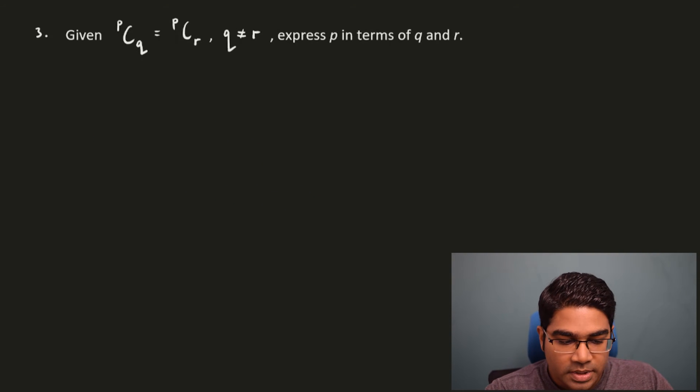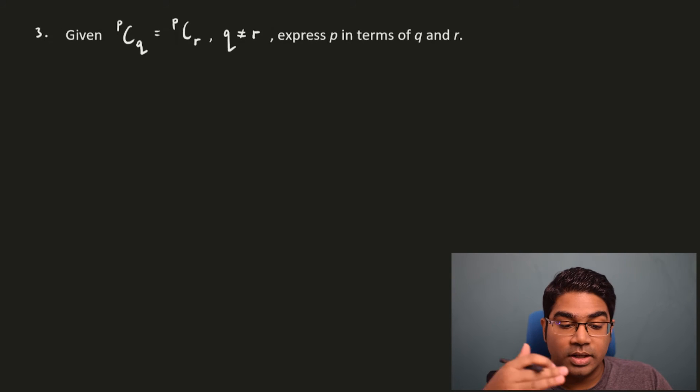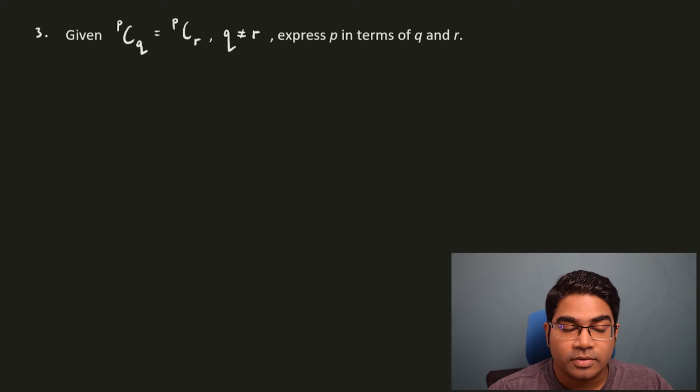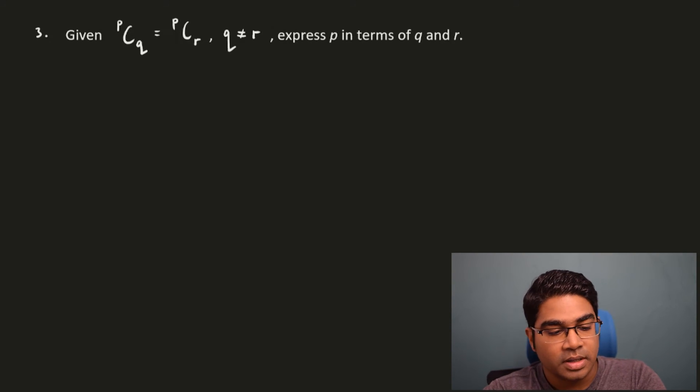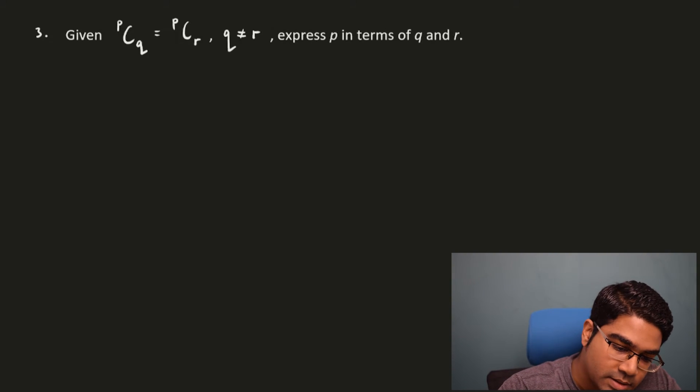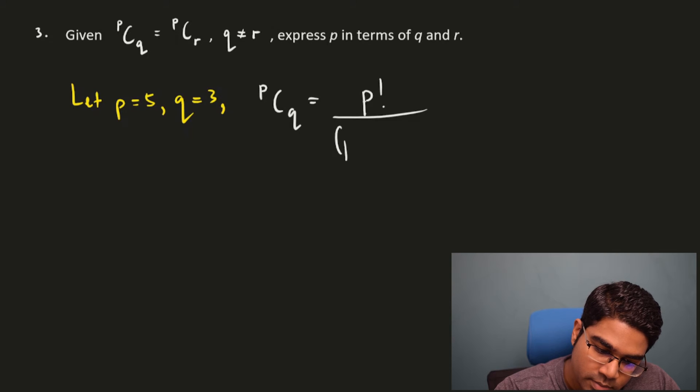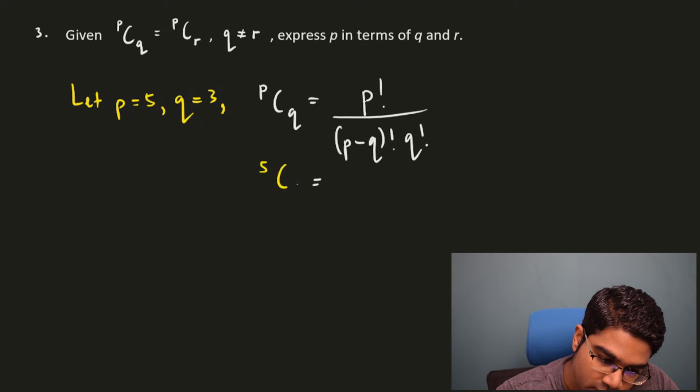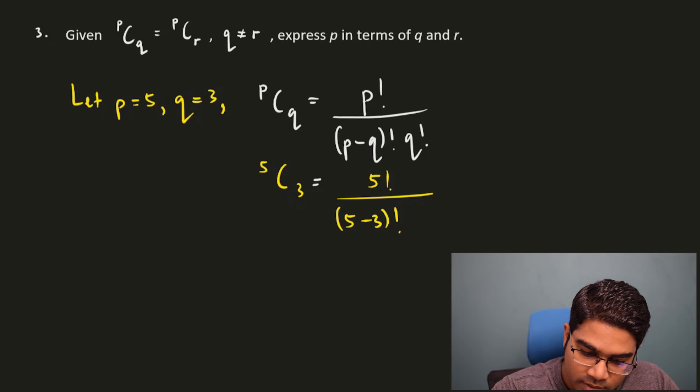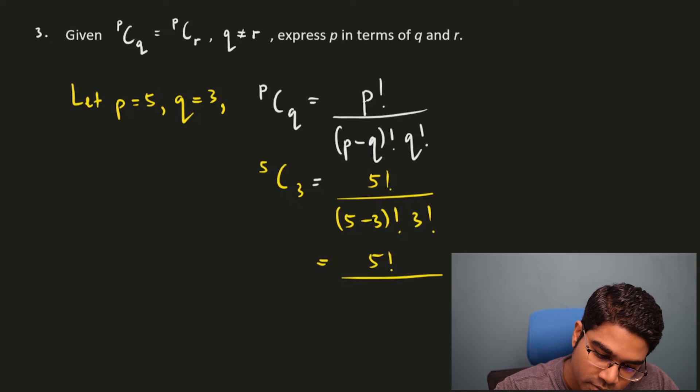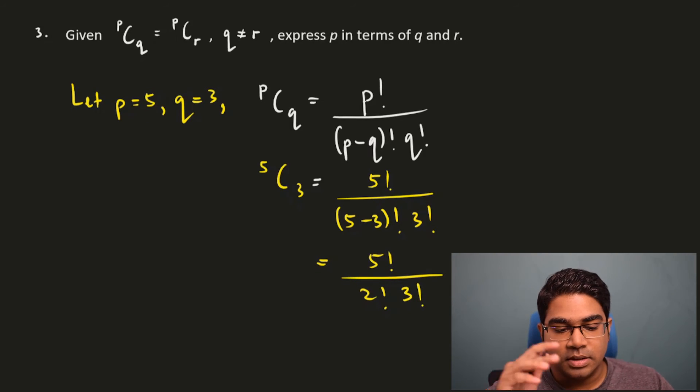Let's look at the third question. Given that PCQ is equals to PCR, and Q is not equals to R, express P in terms of Q and R. In this case, you have to understand the concept of combination. You have to understand the application of the formula. I'm going to use an example to show you how to do this. Let's make P equals to five as an example, and let Q equals to three. Let's write out the formula here. PCQ would be equals to P factorial divided by P minus Q factorial times Q factorial. Substituting our values for P and Q, 5C3 would be equals to 5 factorial over 5 minus 3 factorial times 3 factorial. This would be equals to 5 factorial over 2 factorial times 3 factorial. So this is what we get with 5C3.